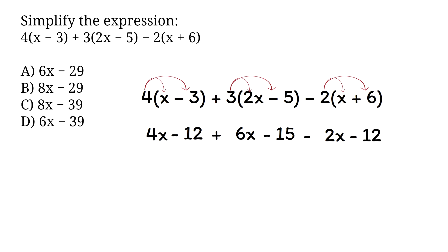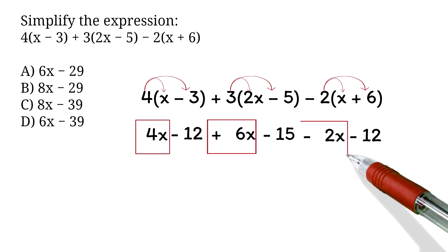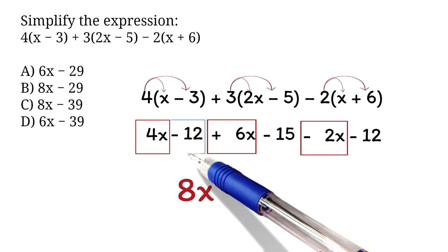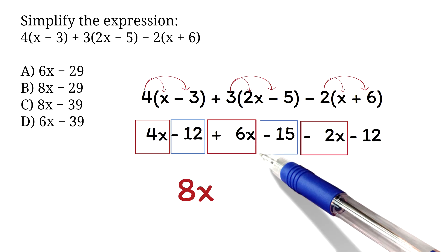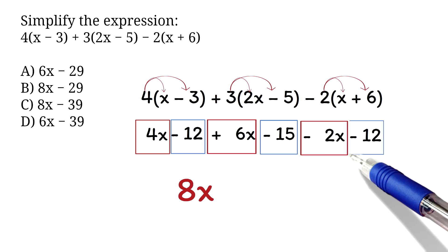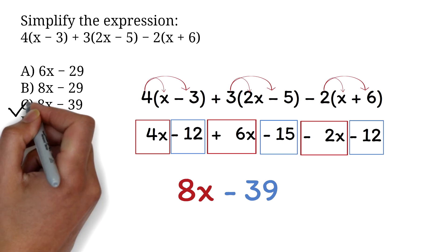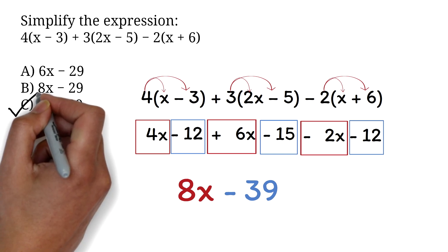Next, combine the like terms — the x terms together and the constant terms together. 4x plus 6x minus 2x equals 8x. Then minus 12 minus 15 minus 12 is minus 39. Therefore, the correct answer is option C: 8x minus 39.